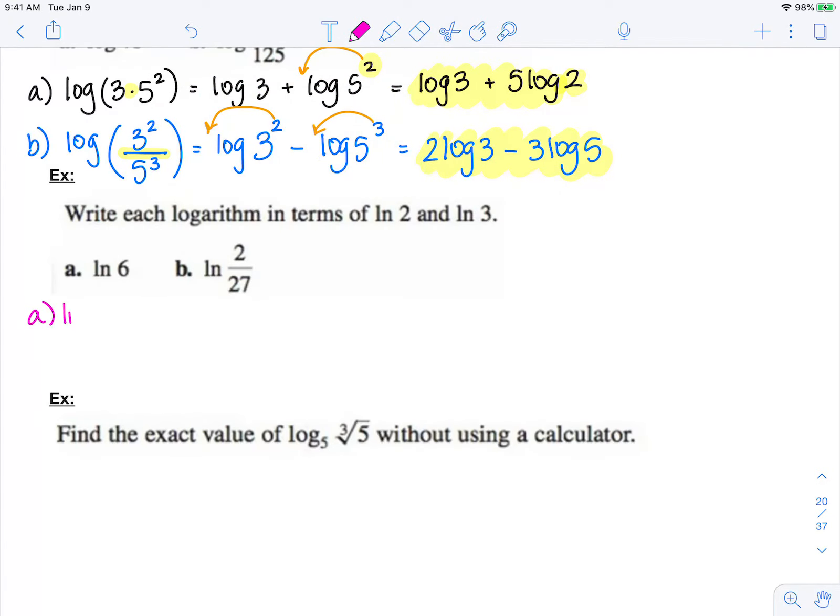I know that 6 is 2 times 3. So properties of logs tells me that when I'm multiplying, that expands to be addition. ln of 2 plus ln of 3. And now I'm done.